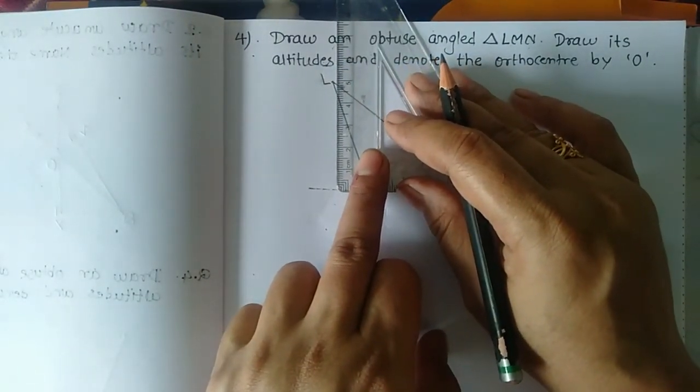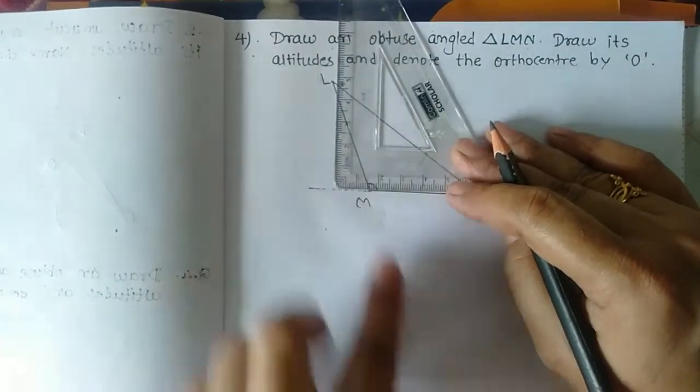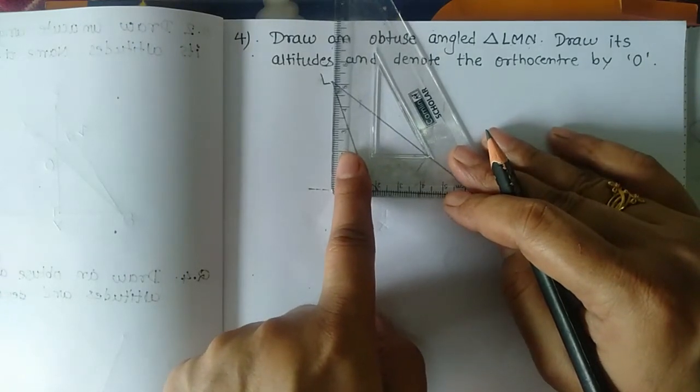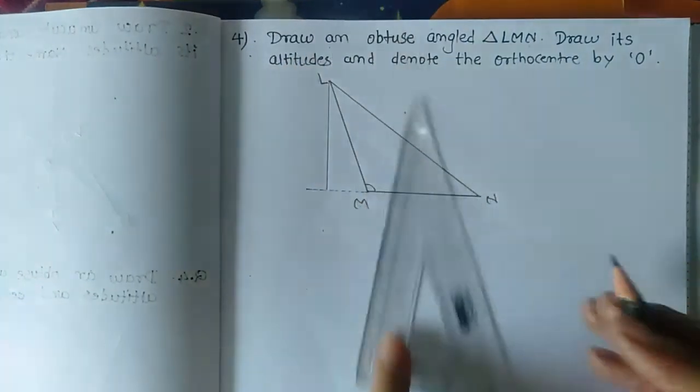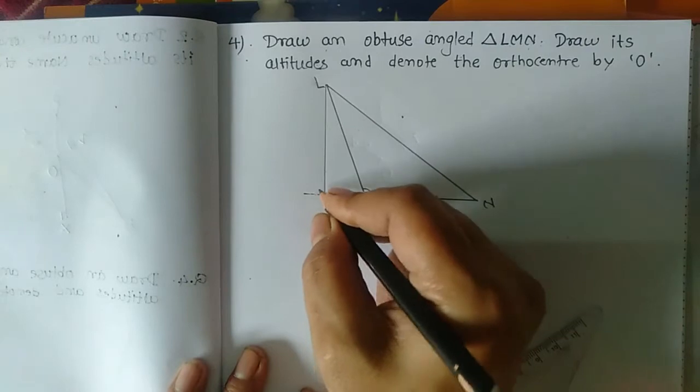This is the altitude drawn from L to side MN. Give the label. Suppose this is A.